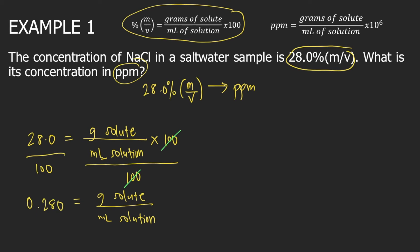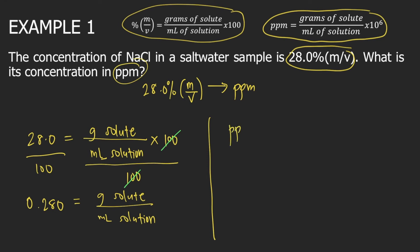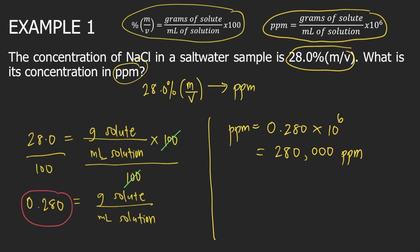So 0.280 is your grams of solute divided by ml of solution. Then use the formula for ppm: ppm is equal to grams of solute divided by ml of solution — which we got as 0.280 — times 10 raised to the 6, or 1 million. If you solve this in your calculator, this is equal to 280,000 ppm. So this is the answer to example one.